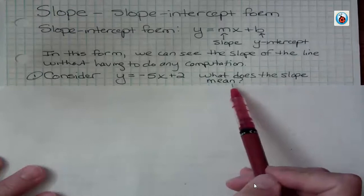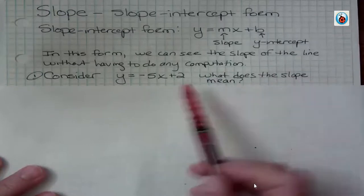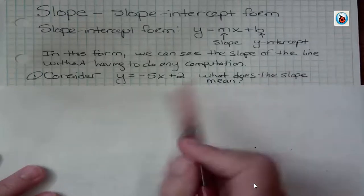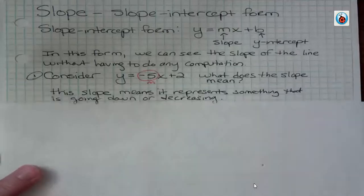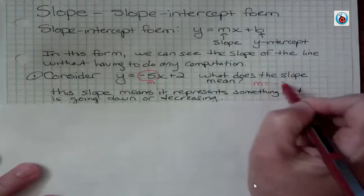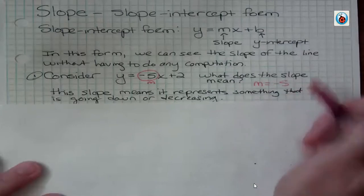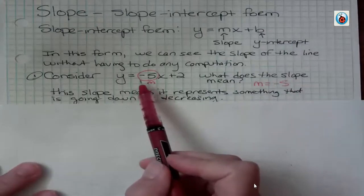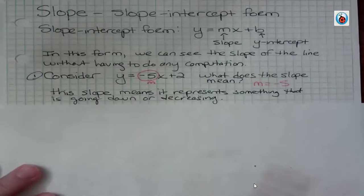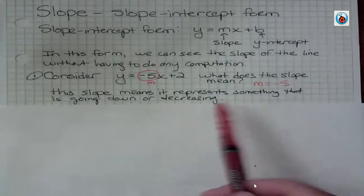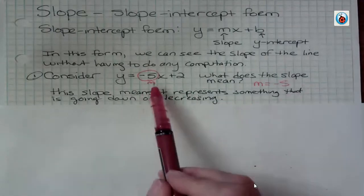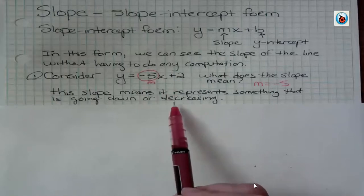What does the slope mean, and what is the slope? Well, the slope in this equation is right here. The slope is negative 5, not negative 5x, but just negative 5, so m equals negative 5. What does the slope mean? When you have a negative slope, that slope means it represents something that is going down or decreasing. So that negative means we have a decreasing function.